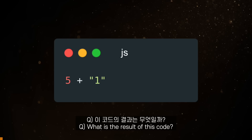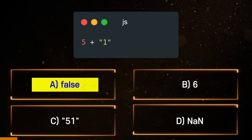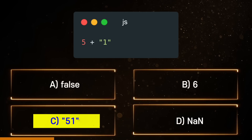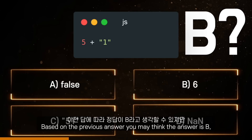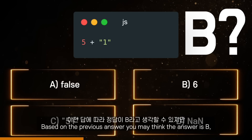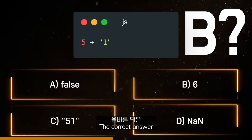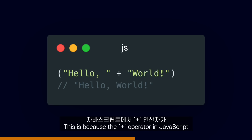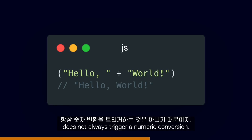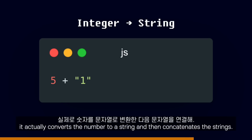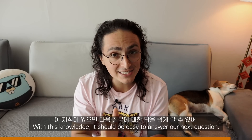Now that we know this, what is the result of this code? A, false. B, 6. C, string '51'. D, not a number. Based on the previous answer, you may think that the answer is B, but it is not. The correct answer is C. That is because the plus operator in JavaScript doesn't always trigger a numeric conversion. When the plus operator is used with a number and a string, it actually converts the number to a string and then concatenates the strings.